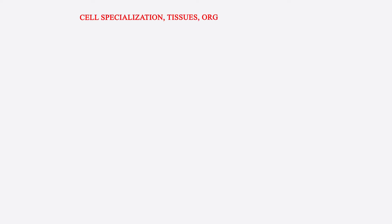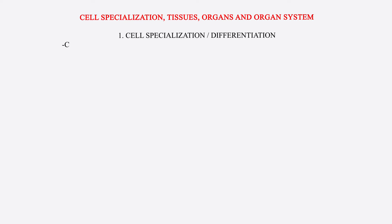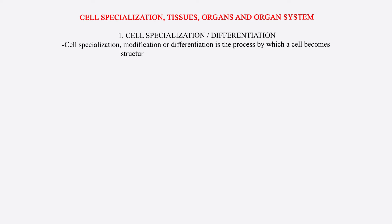Cell specialization, tissues, organs, and organ systems. Cell specialization or differentiation is the process by which a cell becomes structurally modified to perform specific functions.